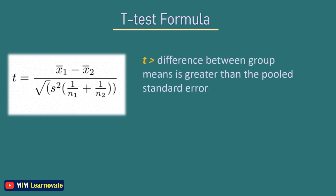A larger T value shows that the difference between group means is greater than the pooled standard error, indicating a more significant difference between the groups. You can compare your calculated T value against the values in a critical value chart to determine whether your T value is greater than what would be expected by chance. If so, you can reject the null hypothesis and conclude that the two groups are in fact different.